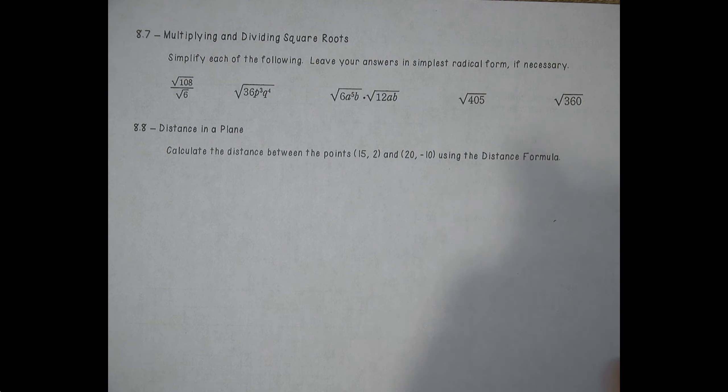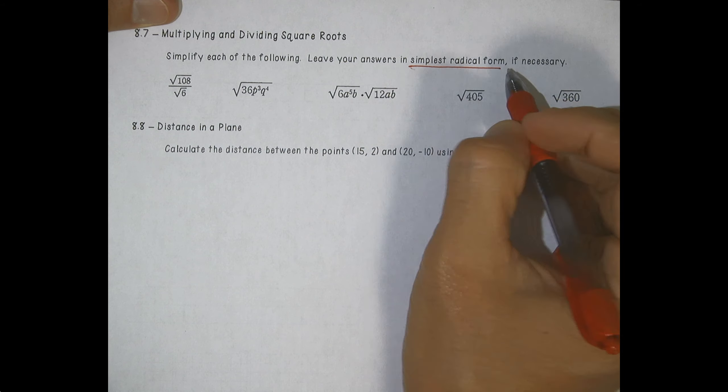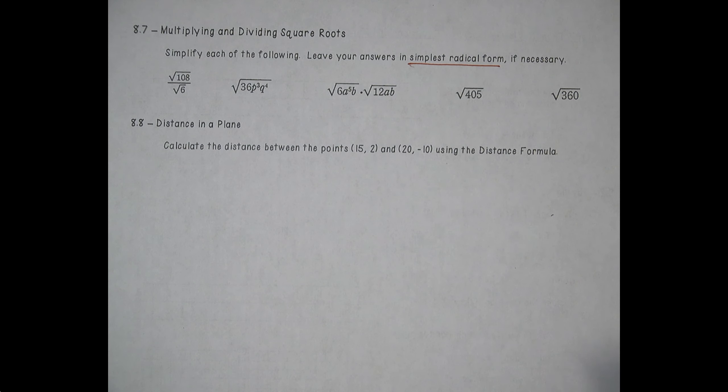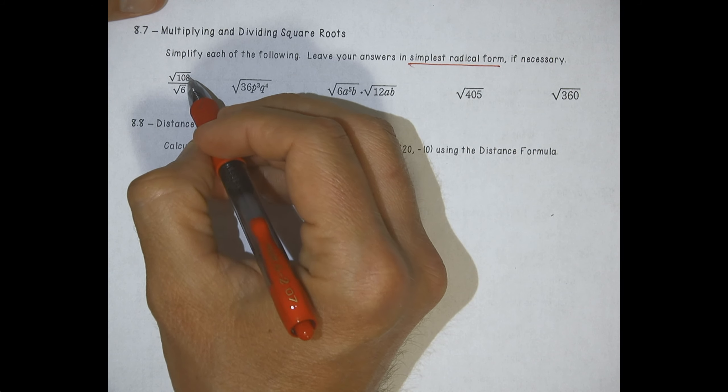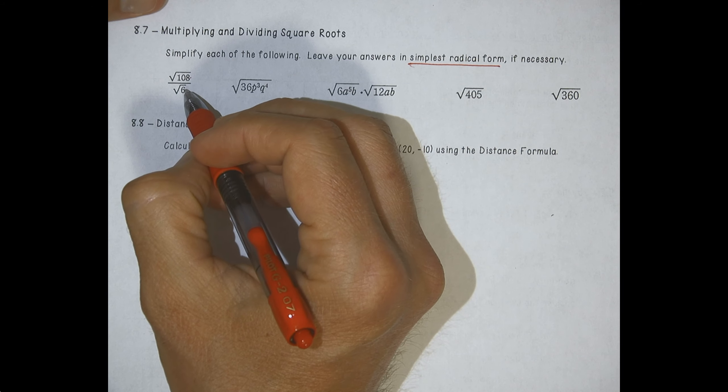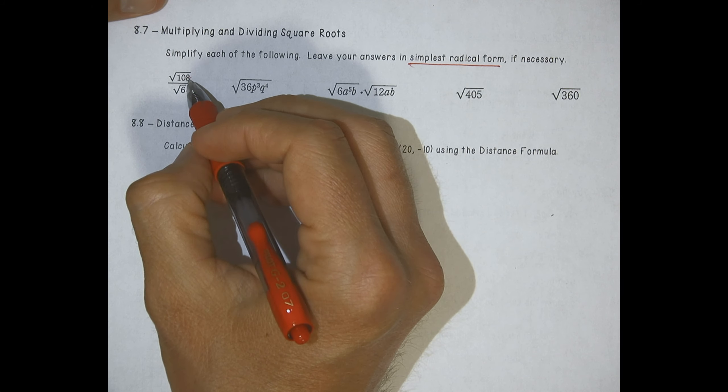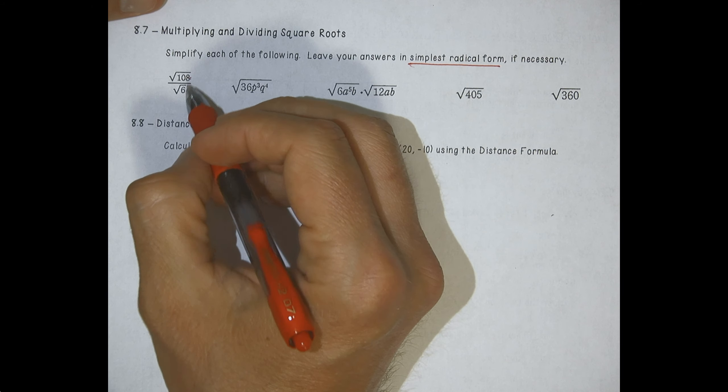Next one: an internet password requires three letters and two digits. For this type, I like to actually put blanks and fill them in with the number of possibilities. So how many passwords are possible? Digits are single-digit numbers, and when you choose a letter, there are 26 letters to choose from in the alphabet.